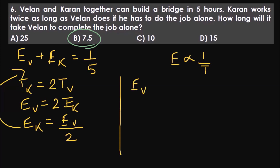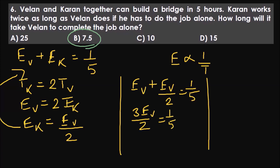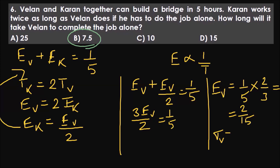Solving: three-halves of Vilan's efficiency equals one by five, so Vilan's efficiency equals two by fifteen. The time taken by Vilan is the reciprocal — fifteen by two, which equals 7.5. That is the answer. If they had asked how long Karan takes alone, since Karan takes twice as long, the answer would be 15.